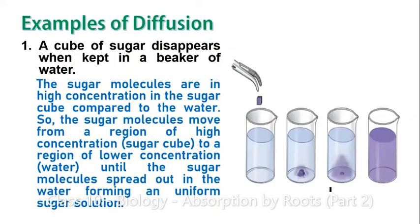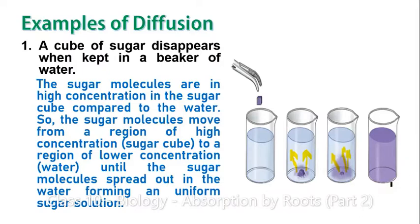Let us see an example of diffusion. When we drop a sugar cube in a beaker of water, after some time the sugar cube has disappeared. The sugar molecules in the cube are in high concentration, so from that region of high concentration, the sugar molecules move out into the water where concentration is less. As they spread out, they form a uniform sugar solution.